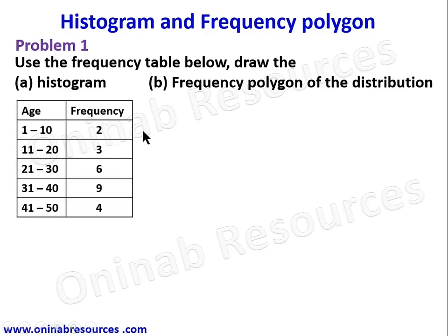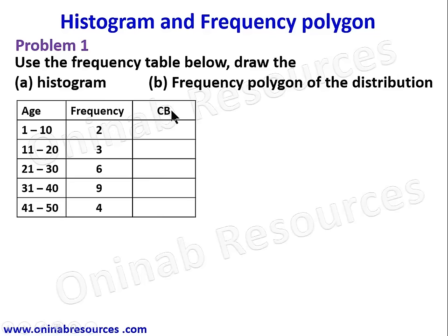To draw a histogram we need the class boundaries of each class interval, so we create an additional column called CB. To get the class boundary, we assume there is a number zero before one, and find the midpoint of zero and one: zero plus one equals one, divided by two gives 0.5.